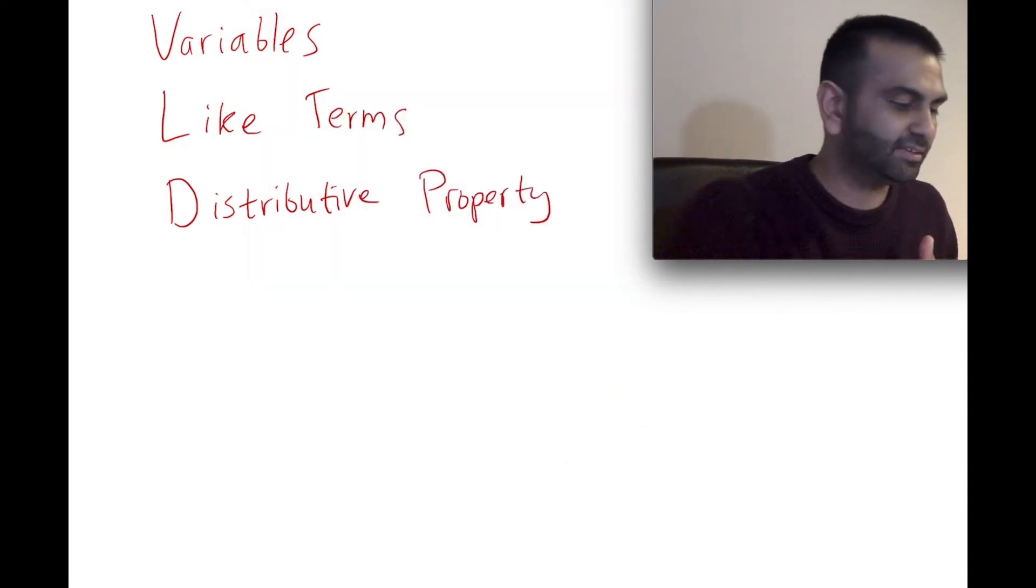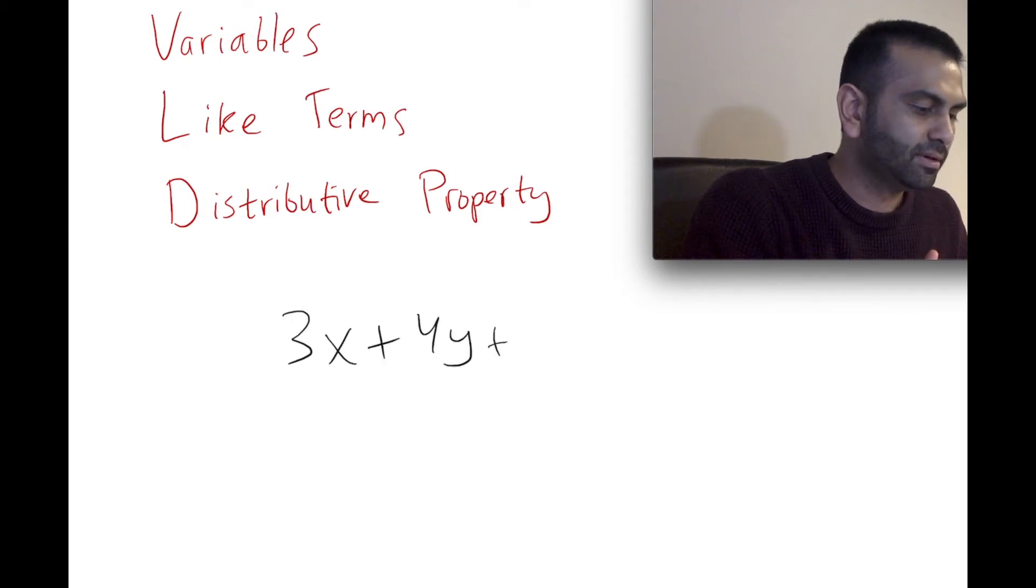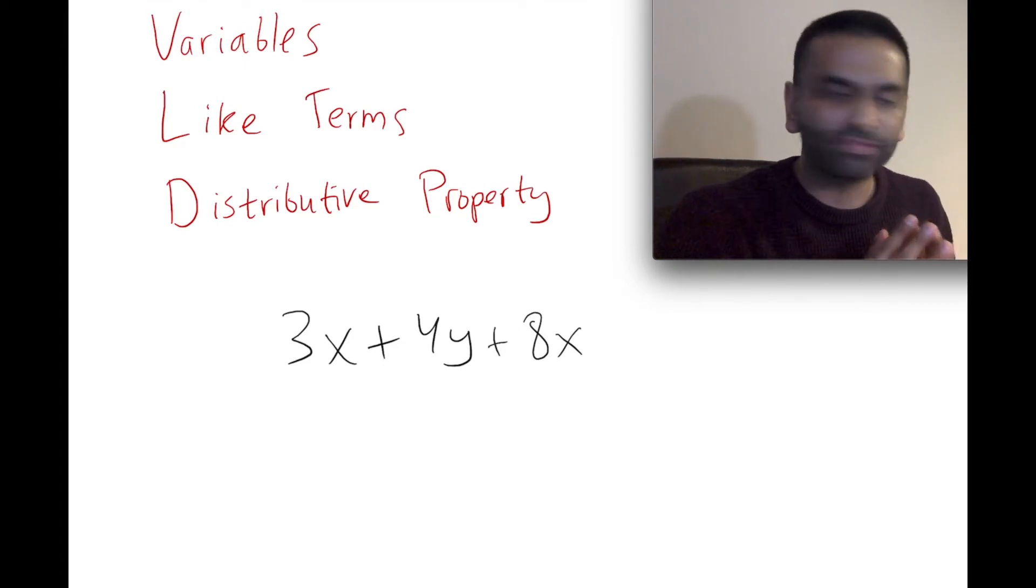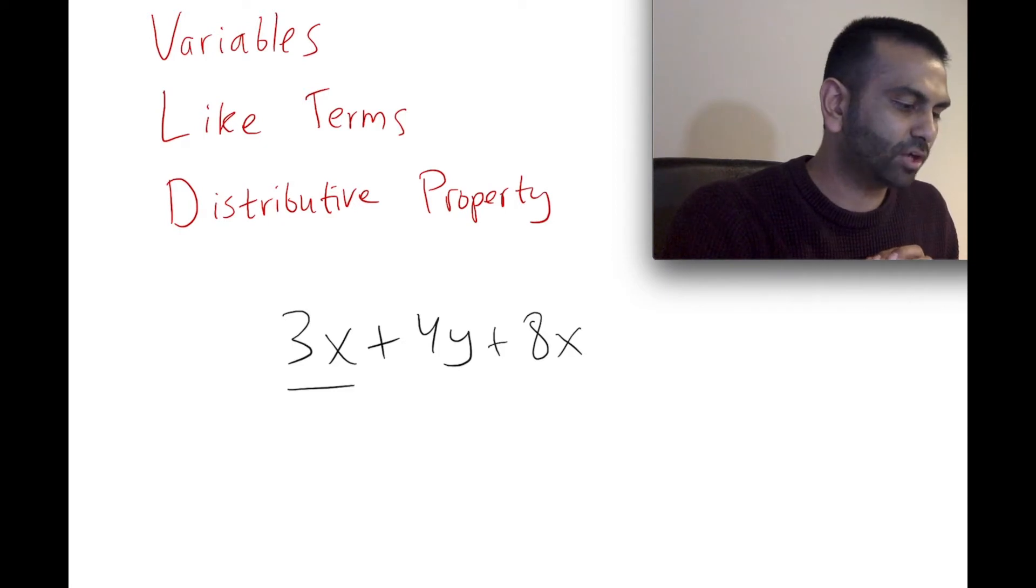Now whenever you're trying to simplify something which has variables in it, like 3X + 4Y + 8X or something like that, essentially what you do is you look for like terms.